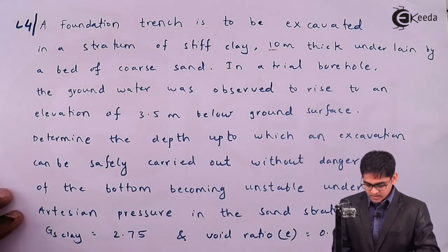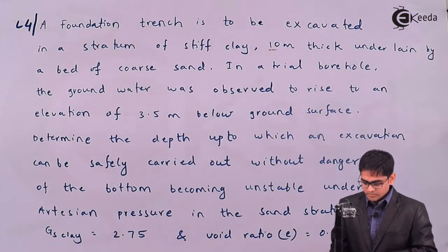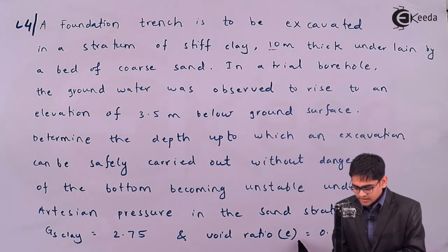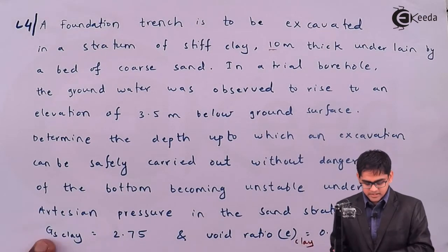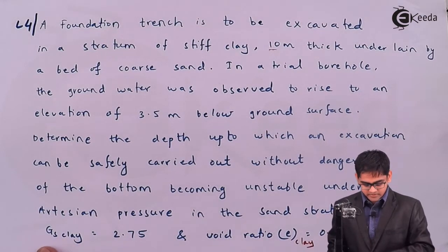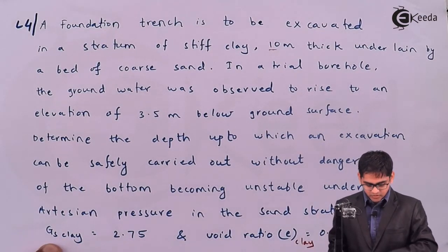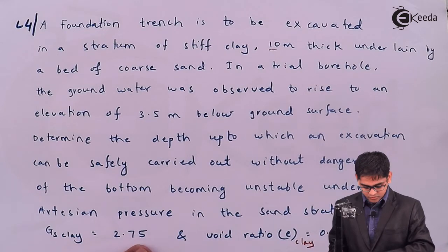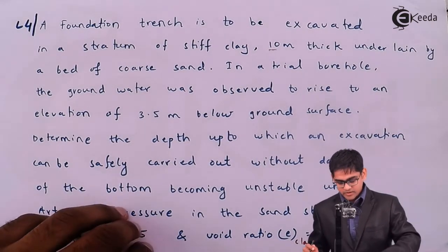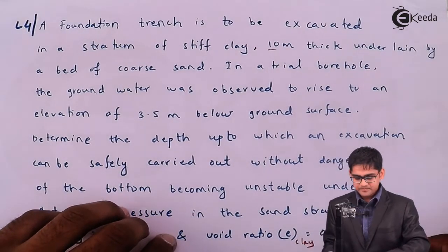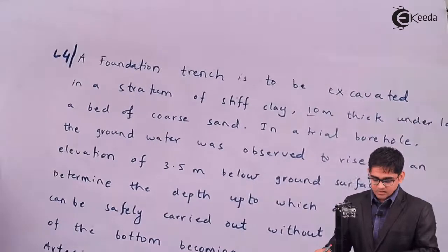The properties pertaining to clay are given. Gs (specific gravity of solids) for clay is 2.75 and void ratio E of the clay is 0.8. I will move ahead with this problem.